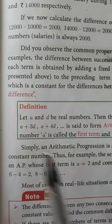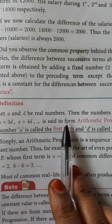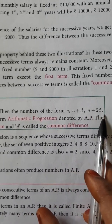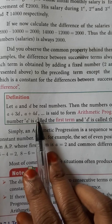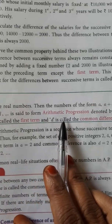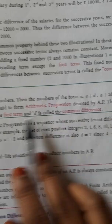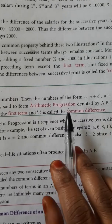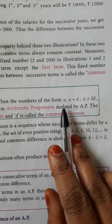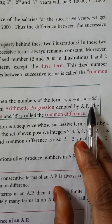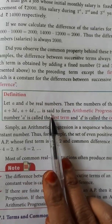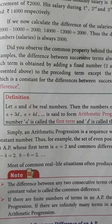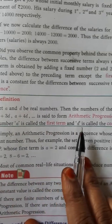Let me give the definition. Let A and D be real numbers. Then the numbers of the form A, A plus D, A plus 2D, A plus 3D, A plus 4D, etc., are said to form an Arithmetic Progression, denoted by AP. The number A is called the first term and D is called the common difference.